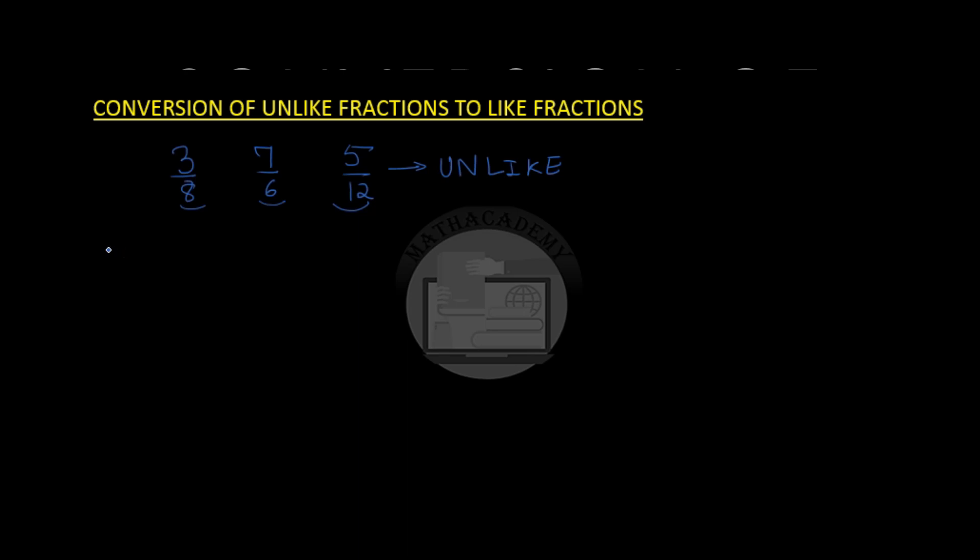So the first step to convert them to like fraction is to take the LCM of the denominators. In my previous videos I have already taught you how do we find the LCM of two or more numbers. So here we have 8, 6 and 12. We have to take the LCM. We divide them by the common prime number.